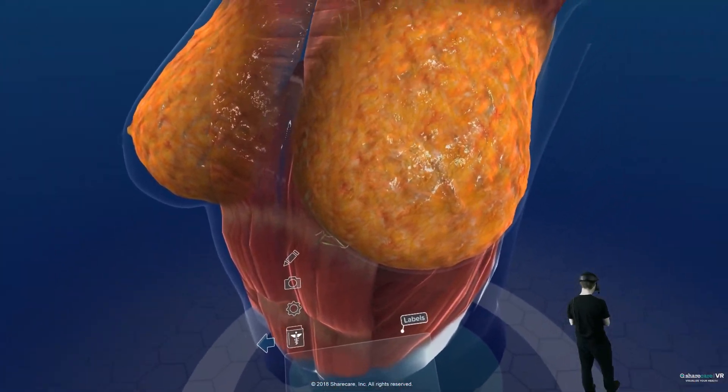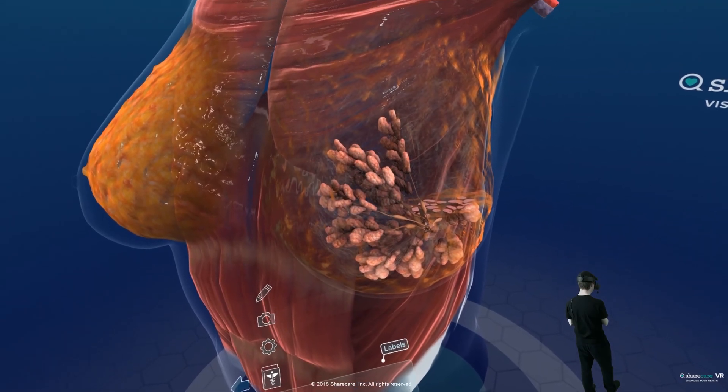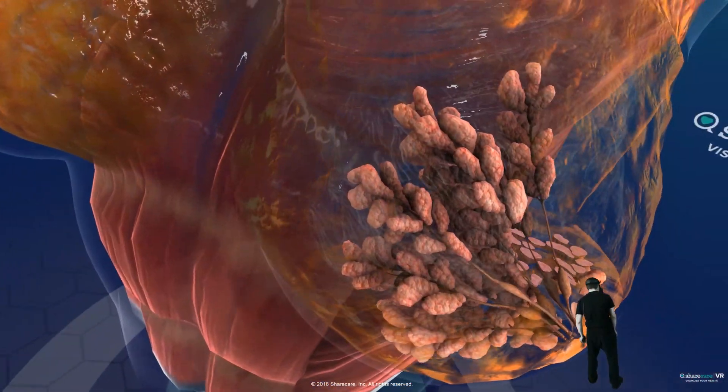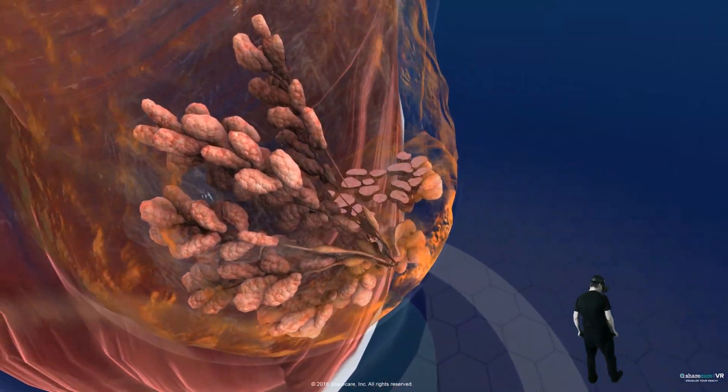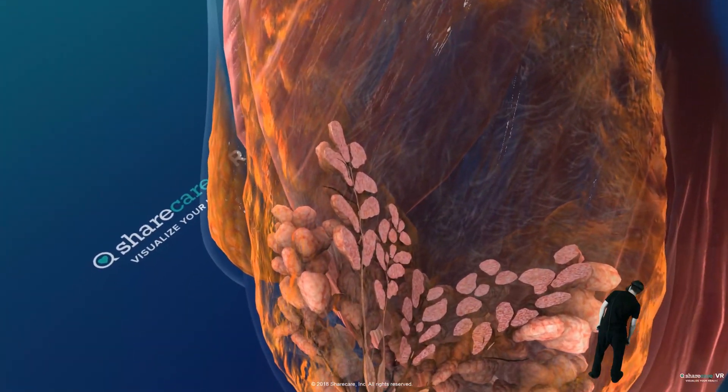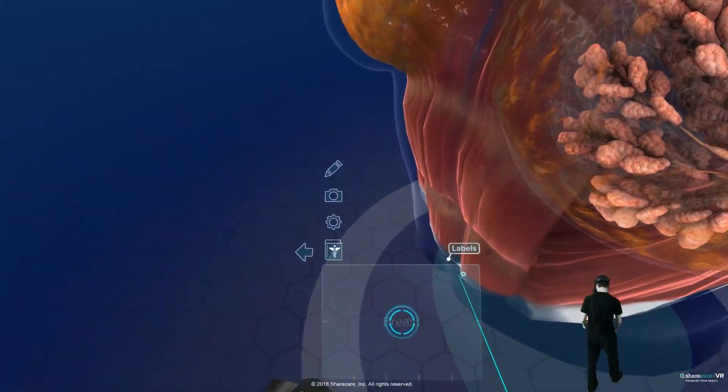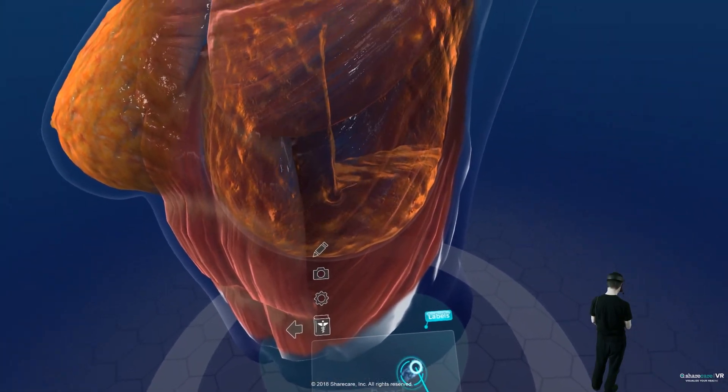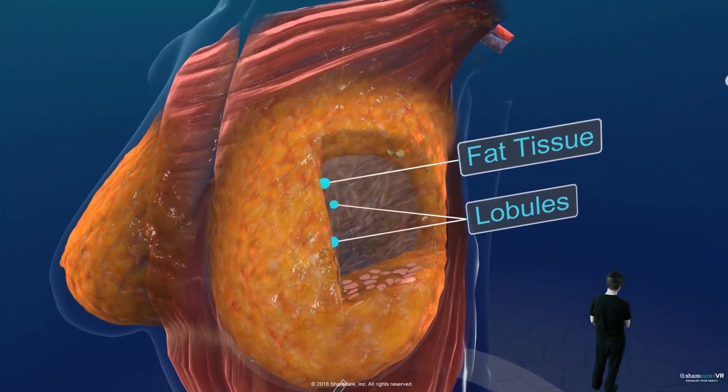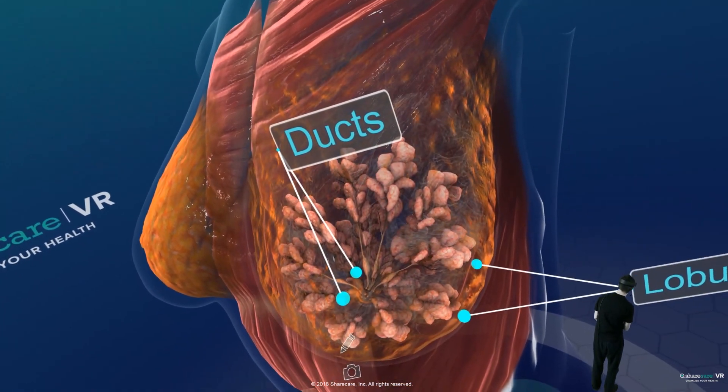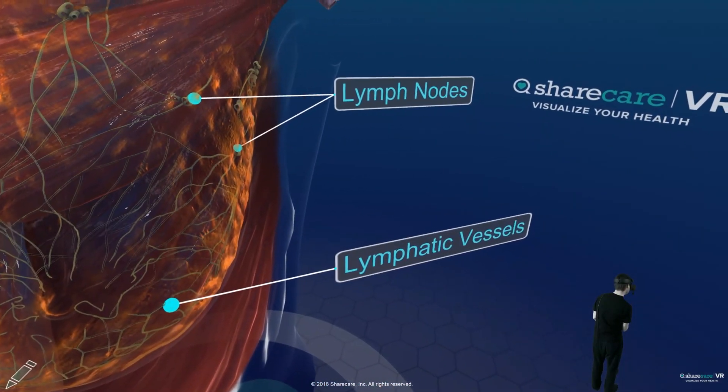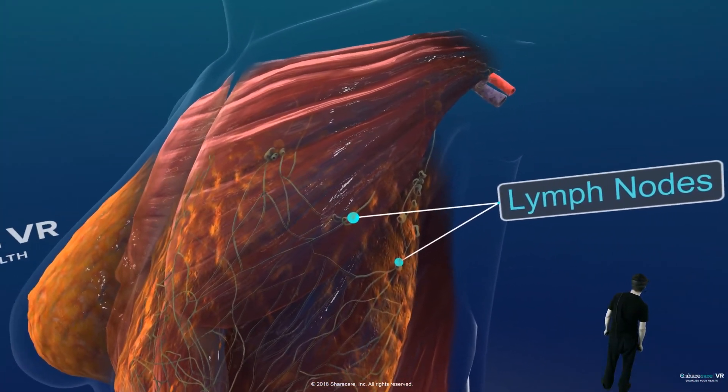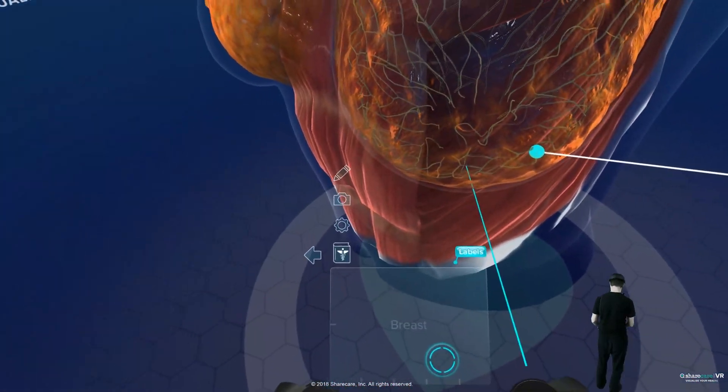So this is a normal breast. And when we switch that tablet here, we can see inside what's inside there. So that's very, very interesting. Look at this. Ducts, lobes, fat tissue, lymphatic vessels, lymph nodes. So cool.